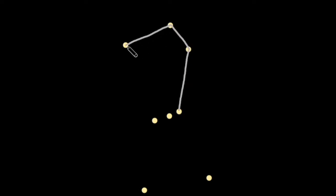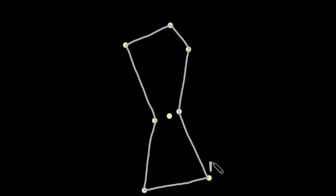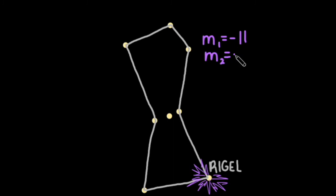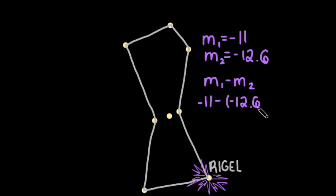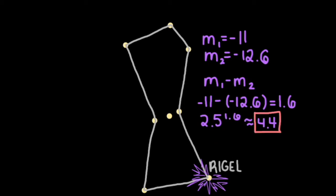Rigel, the blue supergiant at the foot of Orion, will eventually explode into a supernova with a predicted apparent magnitude of about negative 11. How bright, or dim, is that compared to the Moon? Since the Moon's apparent magnitude is smaller, the Moon will appear brighter to us than this supernova explosion. Negative 11 minus negative 12.6 equals 1.6, so we can calculate 2.5 to the 1.6 power to find that the Moon will appear about 4.4 times brighter than the exploding Rigel.